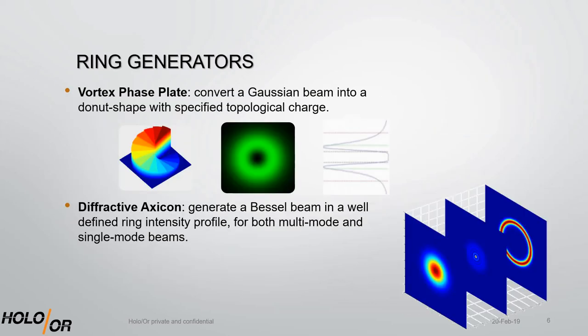Many of HoloOr's users require ring generation as well. The vortex phase plate transforms a Gaussian input beam into a donut profile at the focal plane. The diffractive axicon generates a Bessel beam in a well-defined ring intensity profile for both multi-mode and single-mode beams.